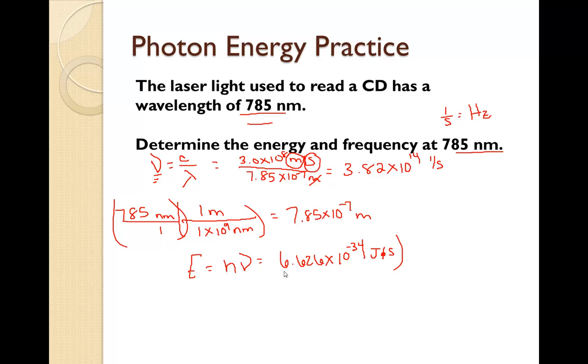This time the seconds cancel and we're left over with joules, which is indeed a unit of energy. That comes out to be 2.53 times ten to the negative nineteen joules.